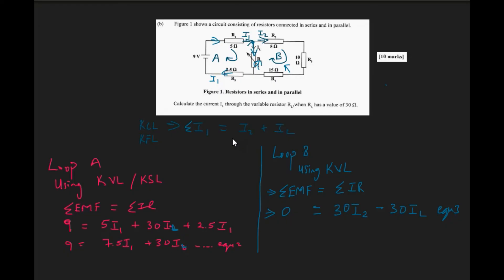This is what we're going to do here: we are going to reduce this equation to a more simple form. I can rearrange it to get that 30IL is equal to 30i2. 30 and 30 will cancel out on both sides.